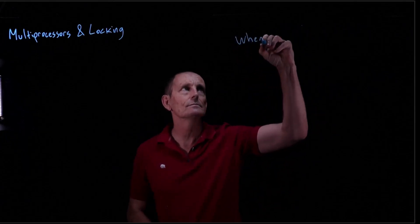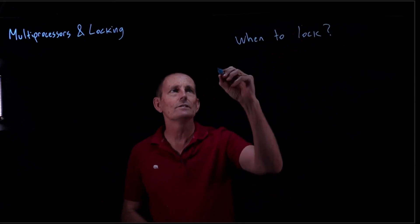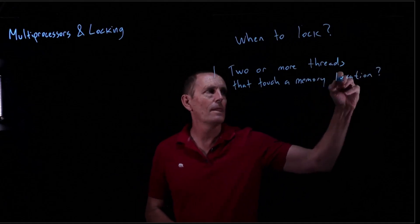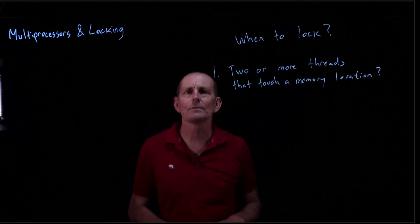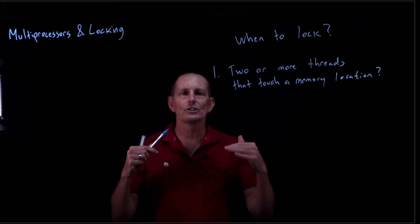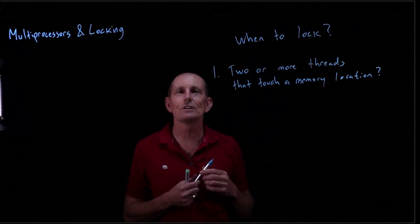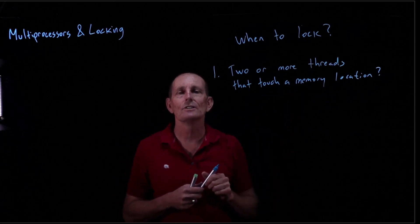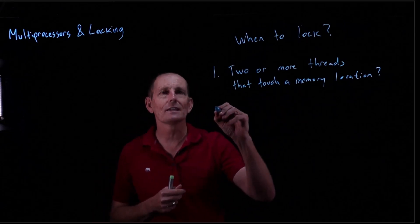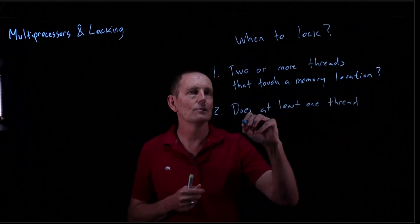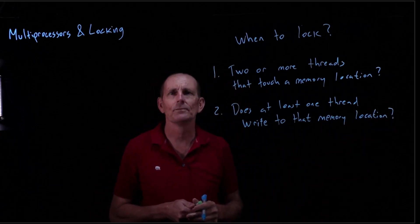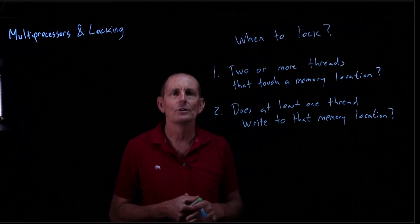So when do you need to lock? Question number one: Do you have two or more threads that touch a memory location? These have to be threads because they're sharing an address space. If we don't share an address space, then we're not really sharing a memory location. So two or more threads touch it, and second, does at least one thread write to that memory location? If so, you need a lock.